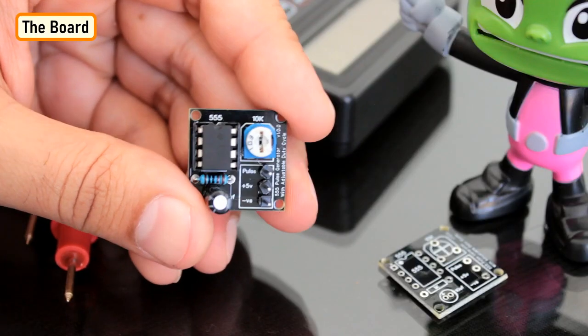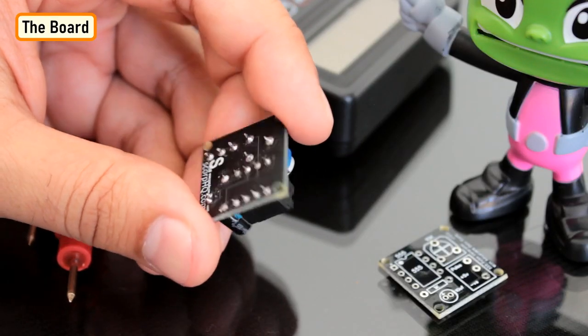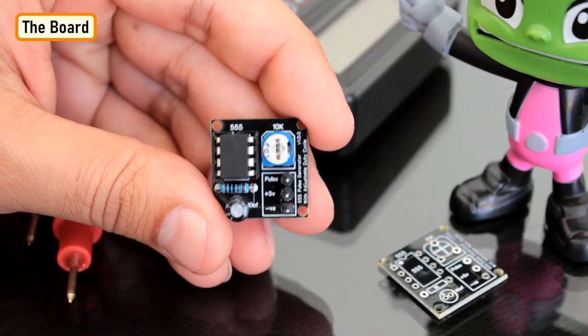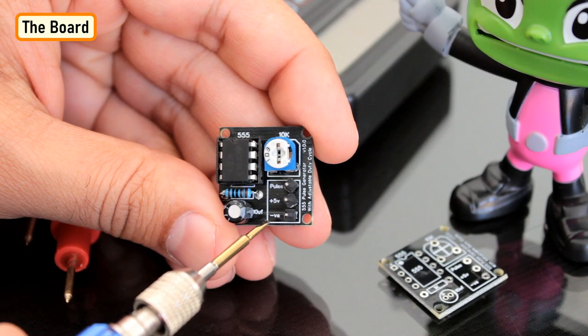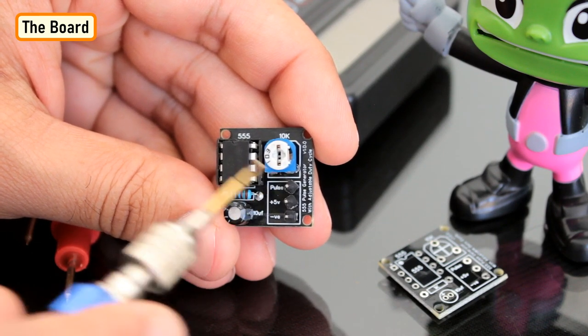To make it easy for you guys, I've created this tiny little 555 pulse generator module. After assembling the components, you just need to power this module by providing a voltage between 5 to 15 volts to get an oscillating output at the pulse pin.